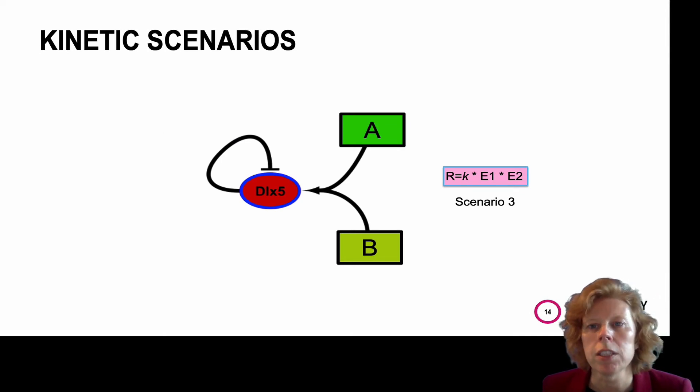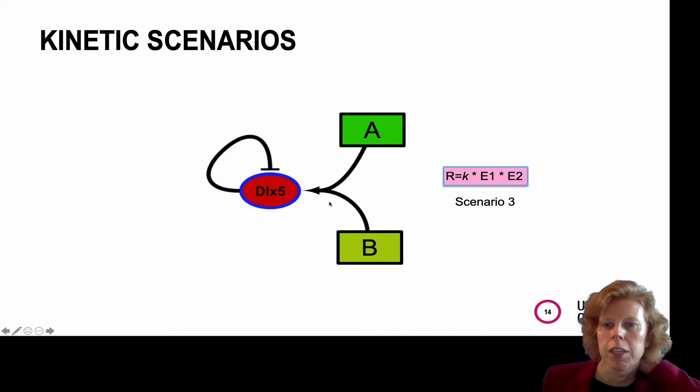In some cases, a node is activated by the combined activity of its upstream regulators. For example, if two upstream proteins need to be both active in order to activate another protein, here A and B need to activate one protein, you can choose kinetic scenario 3.